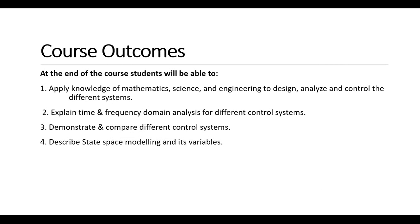Let's see course outcomes. Course outcome is nothing but what a student will be able to do after completion of this course. There are four course outcomes. First: apply knowledge of mathematics, science and engineering to design, analyze and control different systems. Second: explain time and frequency domain analysis for different control systems. Third: demonstrate and compare different types of control systems. Fourth: describe state space modeling and its variables.